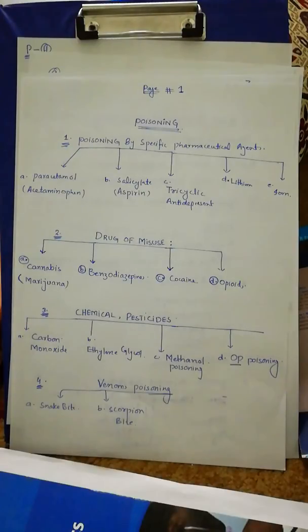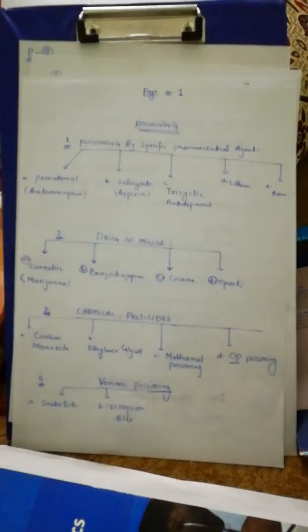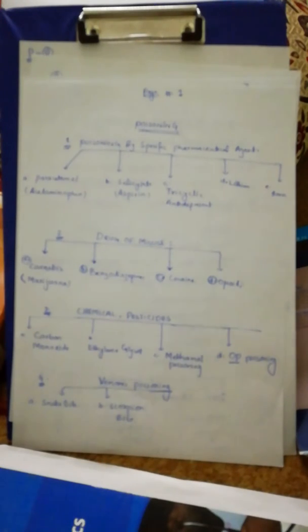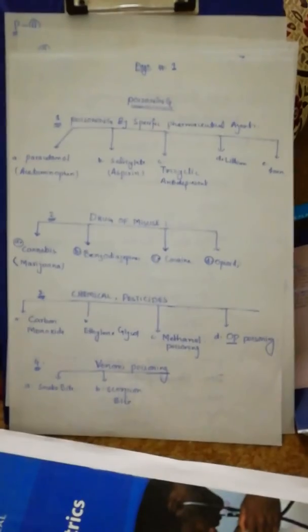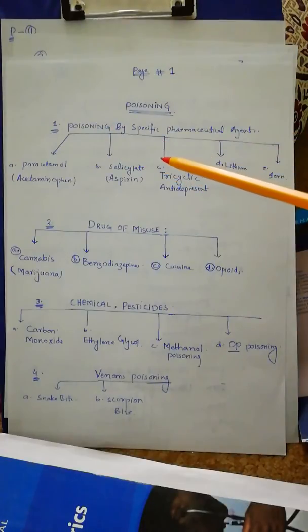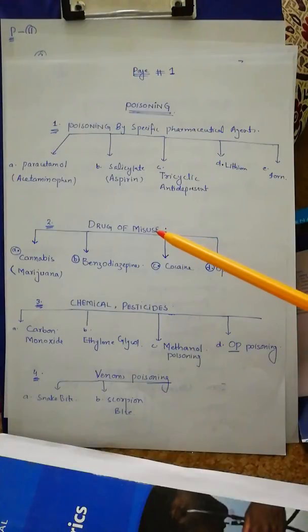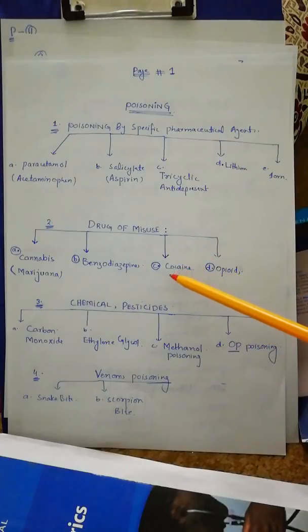I am going to cover this chapter both from a clinical and exam point of view, and will try to cover it in three lectures. The contents of this chapter include different things which cause poisoning. First is poisoning by specific pharmaceutical agents: paracetamol or acetaminophen, salicylate or aspirin, tricyclic antidepressants, lithium, and iron. The second class is drugs of misuse: cannabis, also called marijuana, and benzodiazepines, cocaine, and opiates.